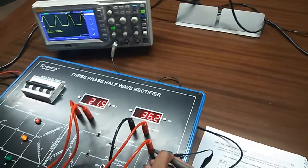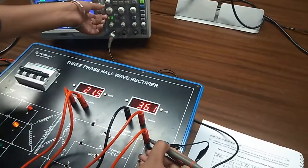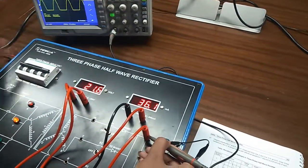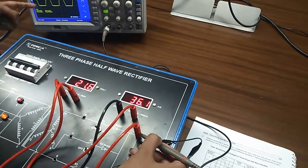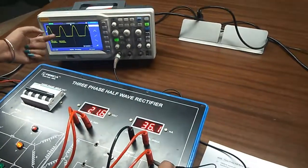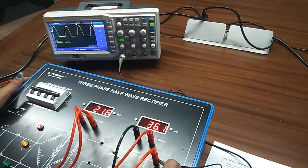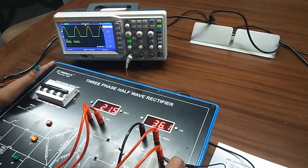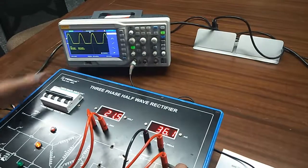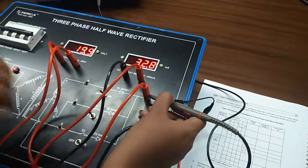We can see that for the positive half cycle of the input waveform, we will get our output, and for the negative half cycle of the input waveform, there will be no output like this.